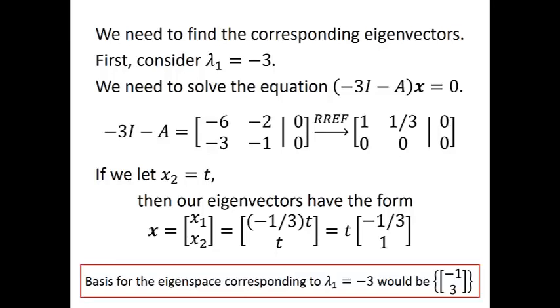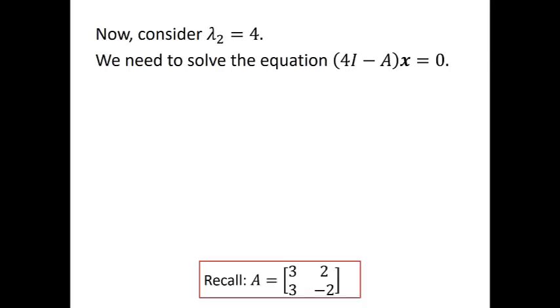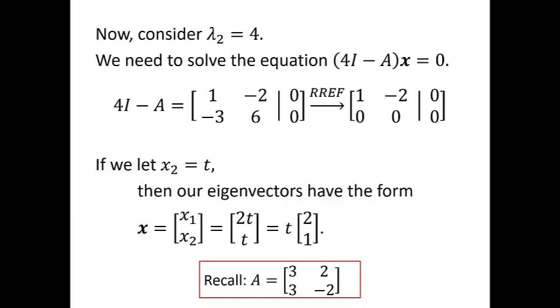So we found the eigenvectors corresponding to eigenvalue -3. Now we consider the other eigenvalue, 4. We solve (4I - A)x = 0. With matrix A being [3, 2; 3, -2], we compute 4I - A which gives [1, -2; -3, 6]. We take the augmented matrix, row reduce, and again have infinitely many solutions. If we let x2 equal t, then x1 equals 2t and x2 equals t. Pulling out t, our eigenvectors are all scalar multiples of the vector (2, 1).